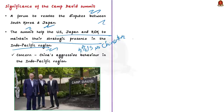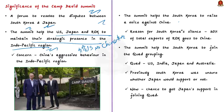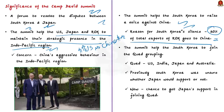Thirdly, the summit helped South Korea to raise its voice against China. Traditionally, South Korea did not oppose China's aggressive actions in the Indo-Pacific region, because of its trade dependence on China — around 20% of South Korea's total exports go to China. A dispute between China and South Korea would affect South Korea's economy. But the Camp David summit has given South Korea some hope, and in the future it may raise its voice against China's aggressive actions, knowing that the US and Japan will come to its aid.